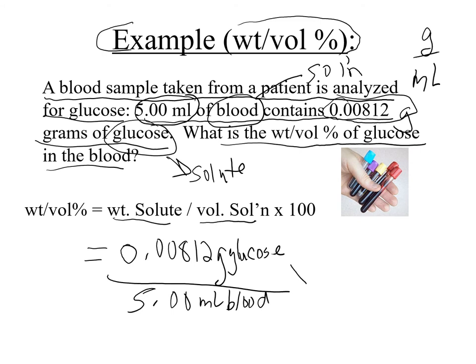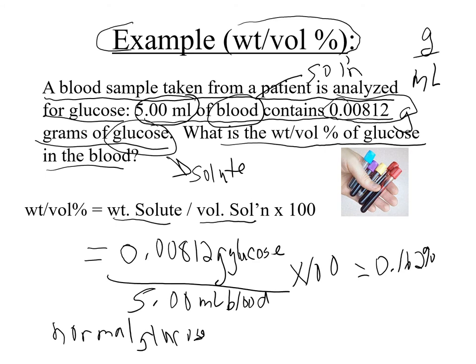We have 0.00812 grams of glucose divided by 5 mL of blood, multiplied by 100 to make it a percent. The result is 0.162%. The normal range for glucose is 0.08 to 0.10%, so this patient has a high glucose level. If asked what might cause that, one answer is diabetes.